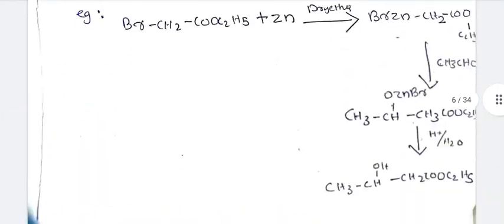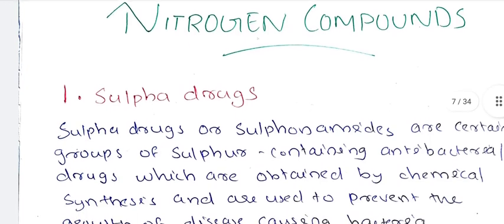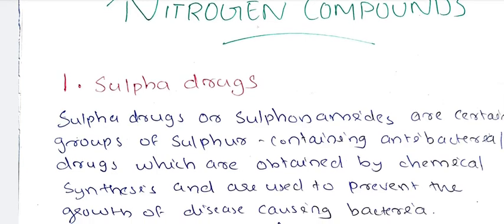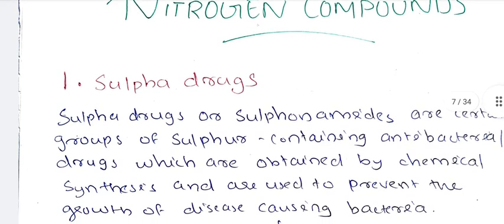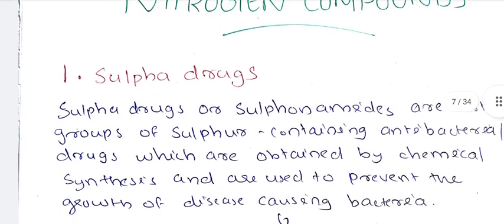Recap: Sulfa drugs are sulfur-containing antibacterial drugs used for fighting against bacterial infections. The structure is based on R-NH, and if you look at benzene sulfonyl chloride, the structure contains R-NH with SO2 linkage — that is the general sulfonamide structure.